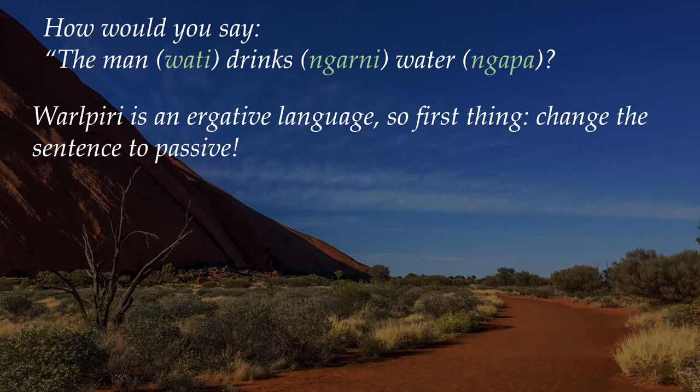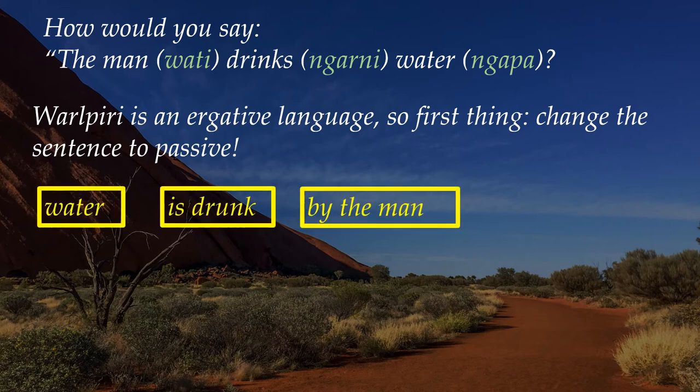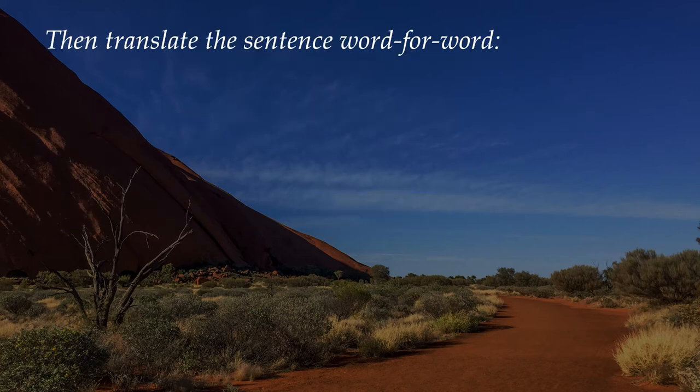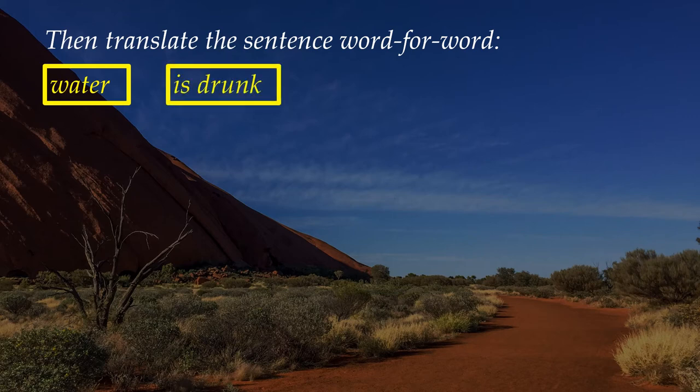First things first: change the sentence to a passive. You have to say 'water is drunk by the man,' and then you translate it word for word. Water is 'ngapa' — we learned this already. Then 'to be drunk' or 'is drunk,' and then 'by the man.'